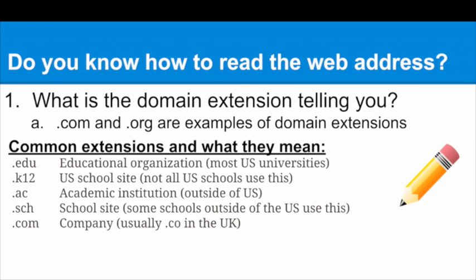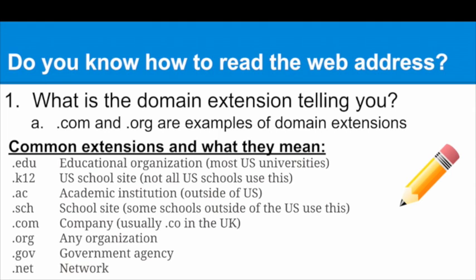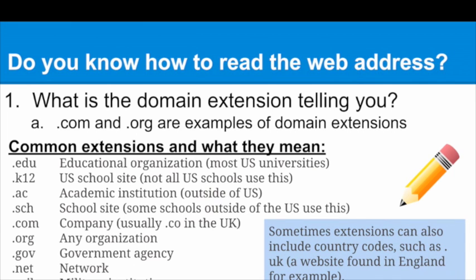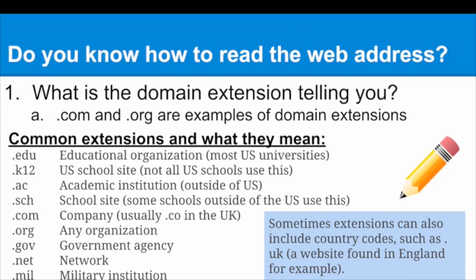.com usually means it's a company; however, in the UK it might be .co instead of .com. .org means any organization and is generally a reputable site. .gov means a government agency, .net means a basic network, and .mil means a military institution. Extensions can also include country codes such as .uk for England. You can research country codes to find where a website originates from, and you can even use country codes in your search to get a different perspective on what you're researching.